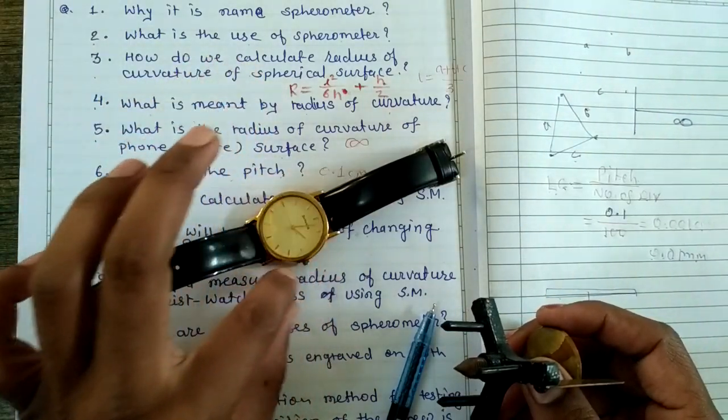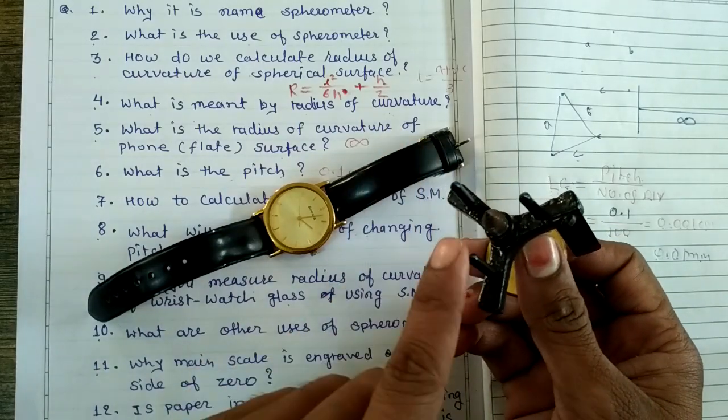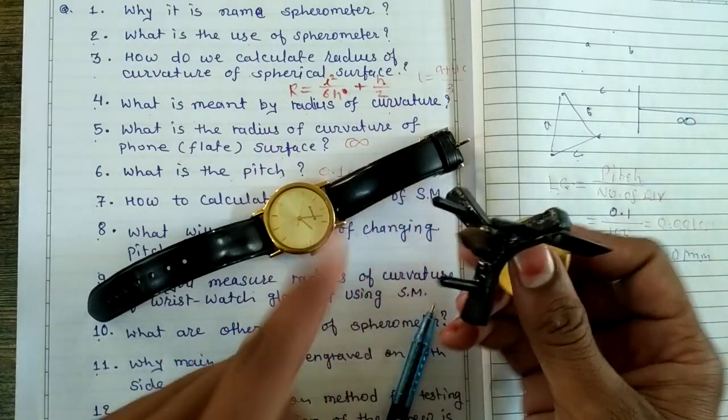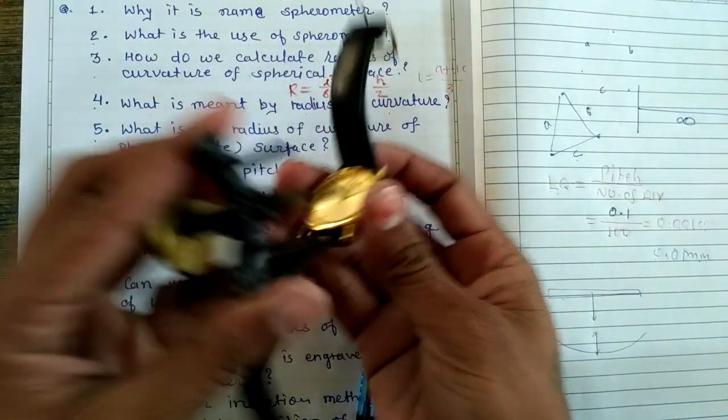If we try to put the spherometer's arms on the glass, it is not possible. Have a look - so we can't determine the radius of curvature of this glass.